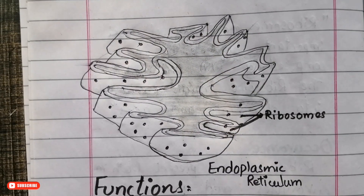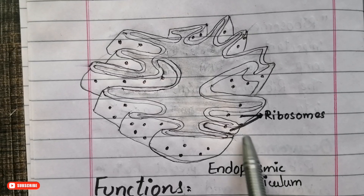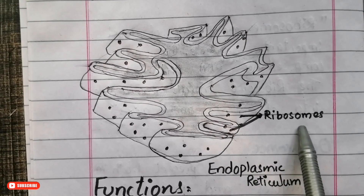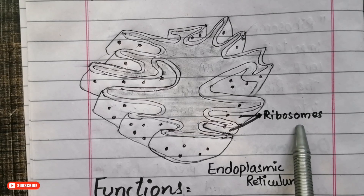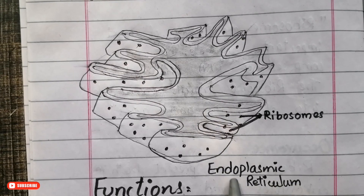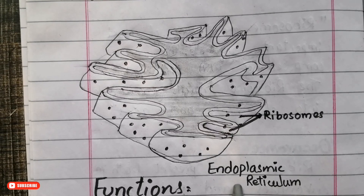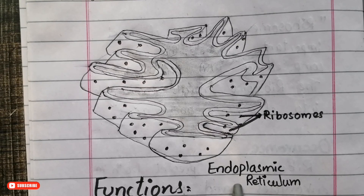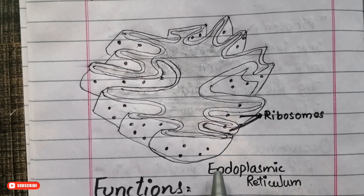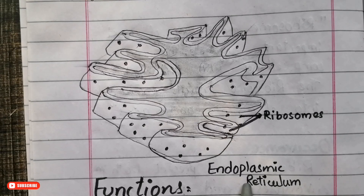Here is a simple, basic diagram of the ribosome structure. To understand ribosome occurrence and its location inside the cell, you must first understand the endoplasmic reticulum. The endoplasmic reticulum is another organelle present in the cytoplasm of the cell, and it is of two types: rough endoplasmic reticulum and smooth endoplasmic reticulum.